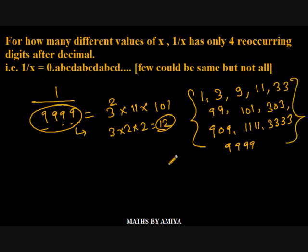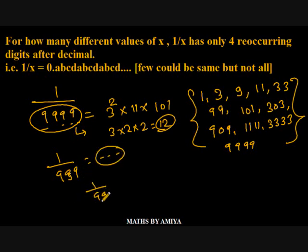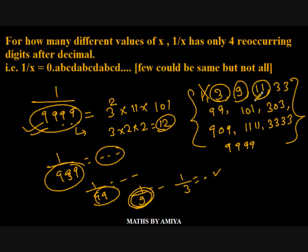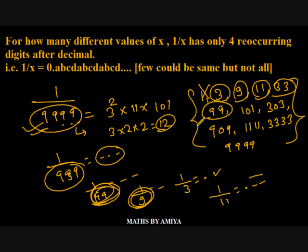At first glance the answer might seem to be 12, but no — the answer is not 12. If I say 1 upon 999, that gives 3-digit reoccurring. 1 upon 99 is 2-digit reoccurring. 1 upon 9 is 1-digit reoccurring. So we want factors of 9999 but should not be factors of 999 or 99 or 9. For example, 3 is a factor of 9, so 1 upon 3 has only 1-digit reoccurring. Similarly, 11 is a factor of 99, so 1 upon 11 gives double-digit reoccurring. 33 and 99 are also factors of 99, giving double-digit reoccurring, so we cannot take those either.